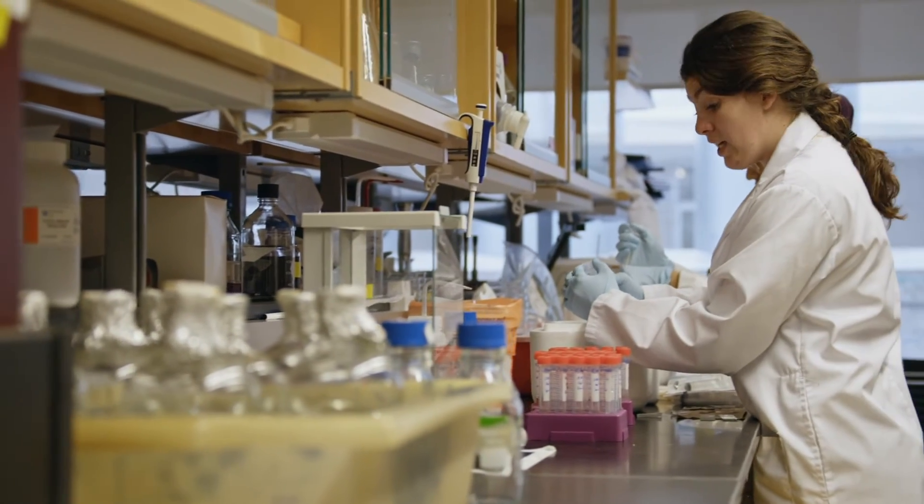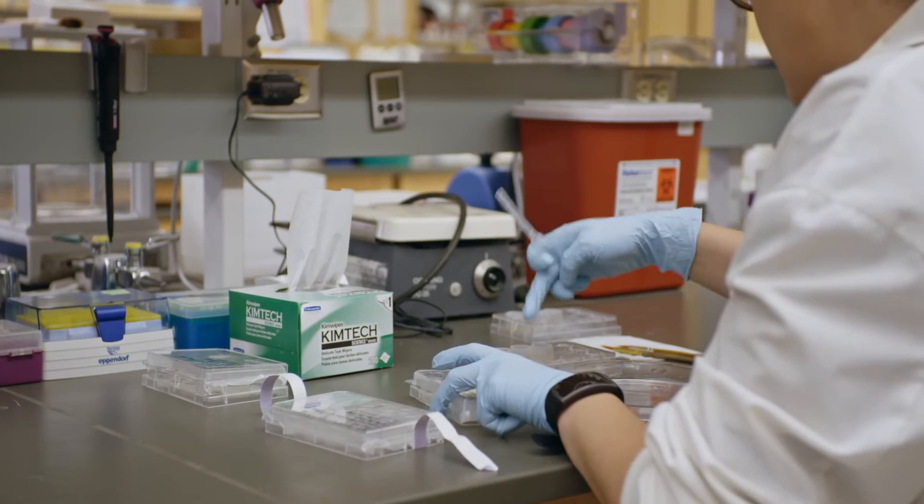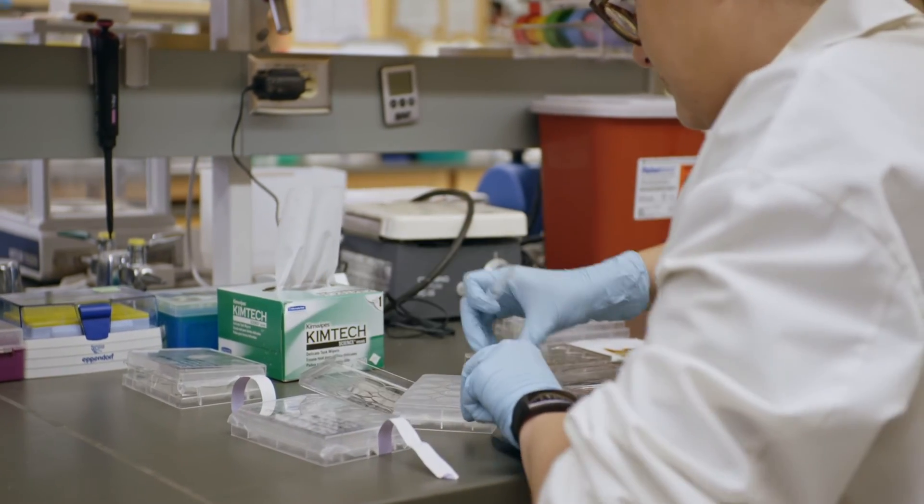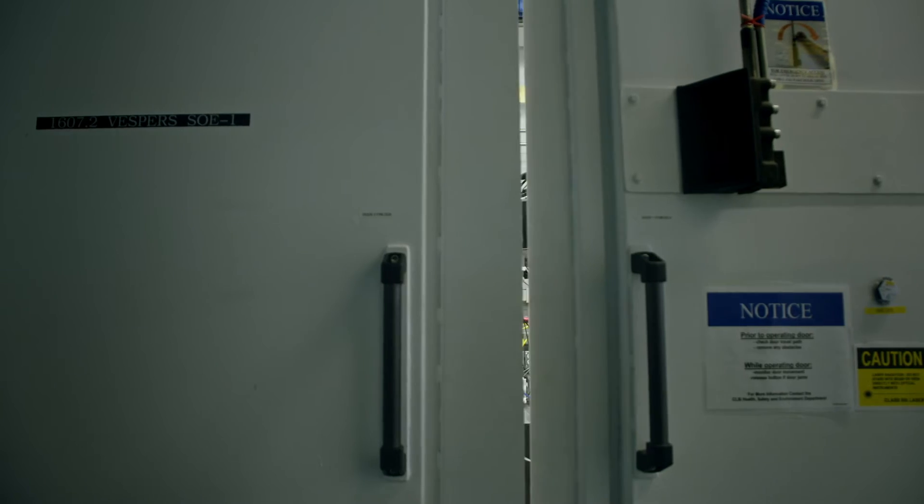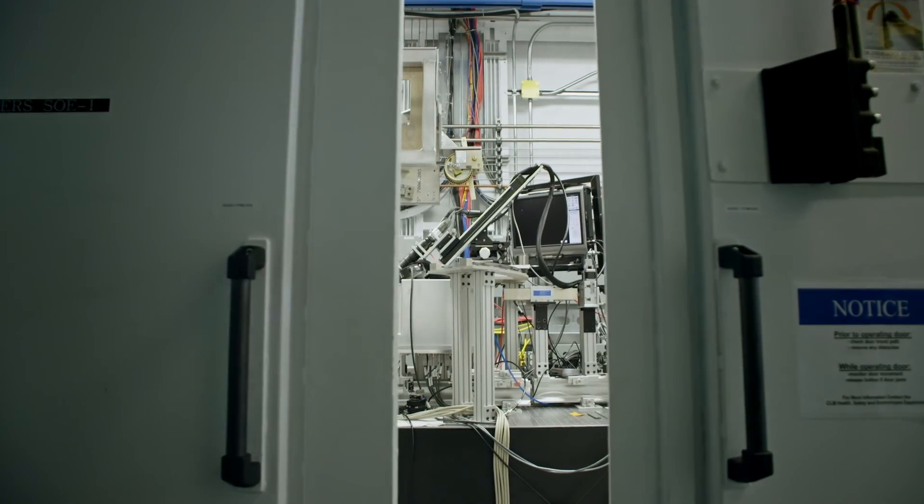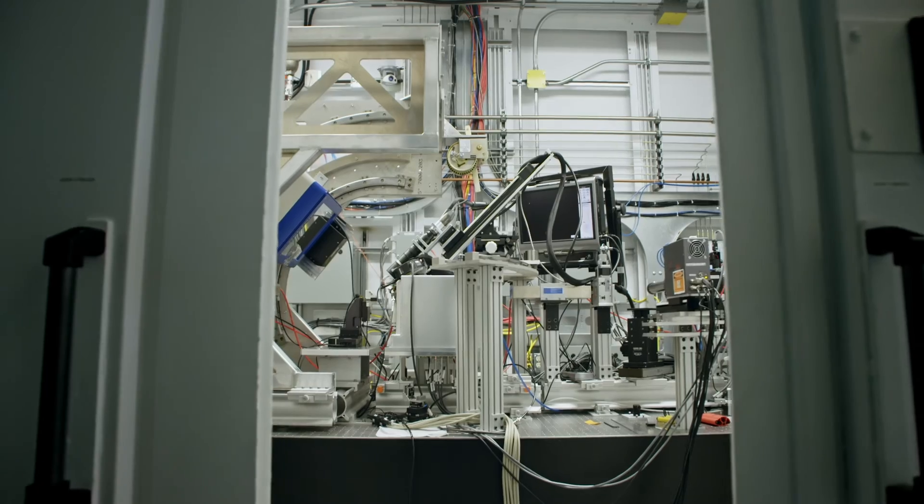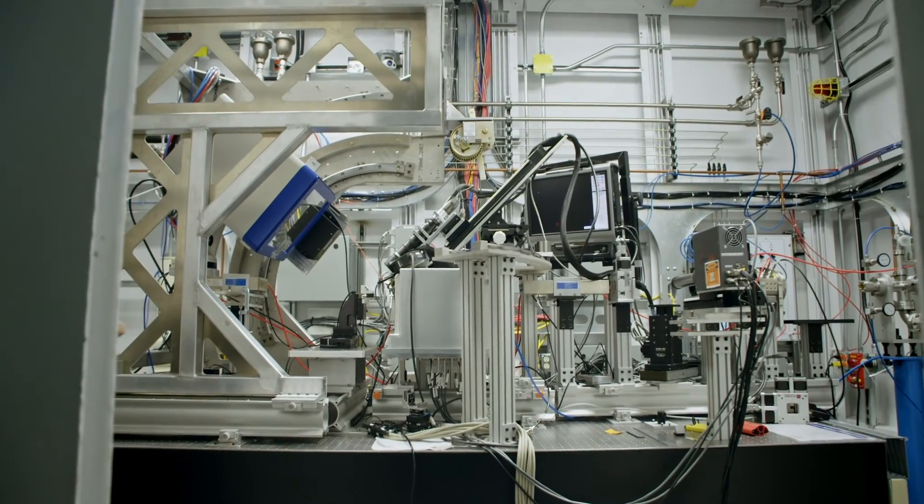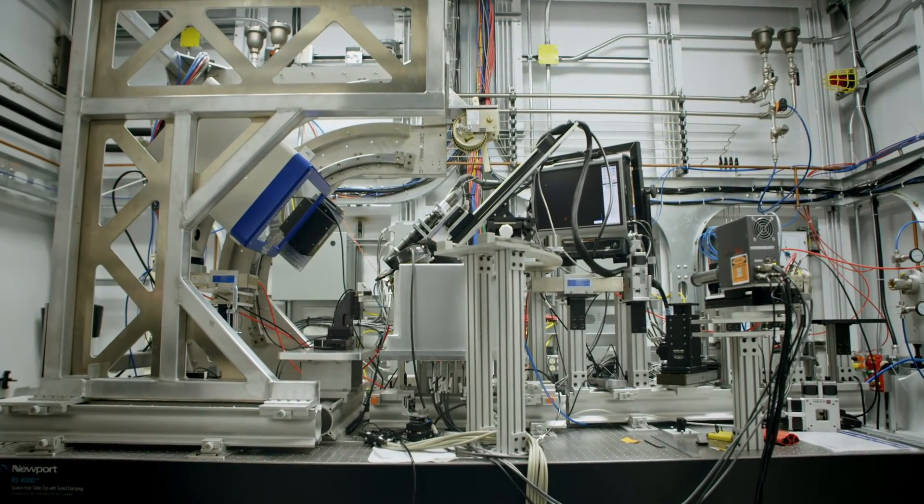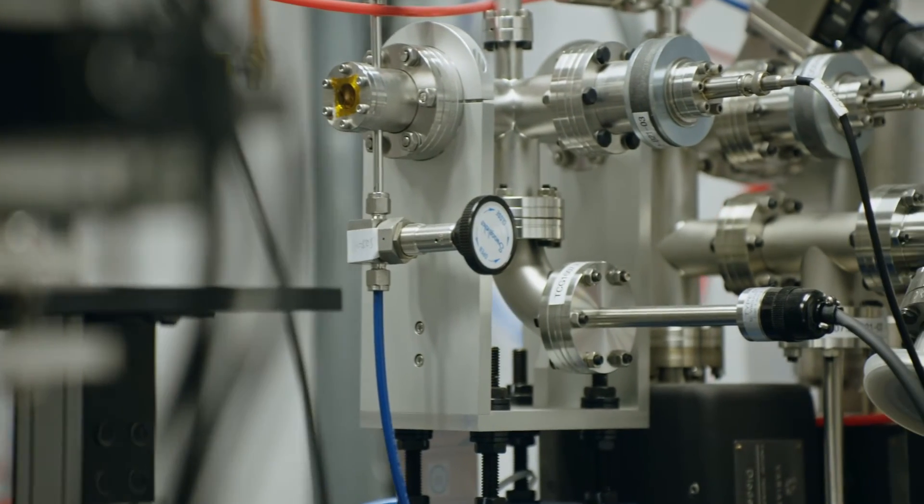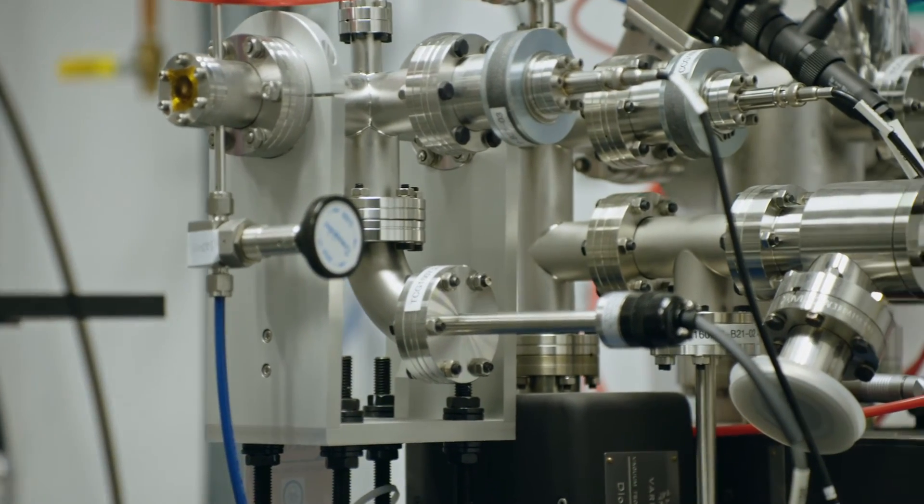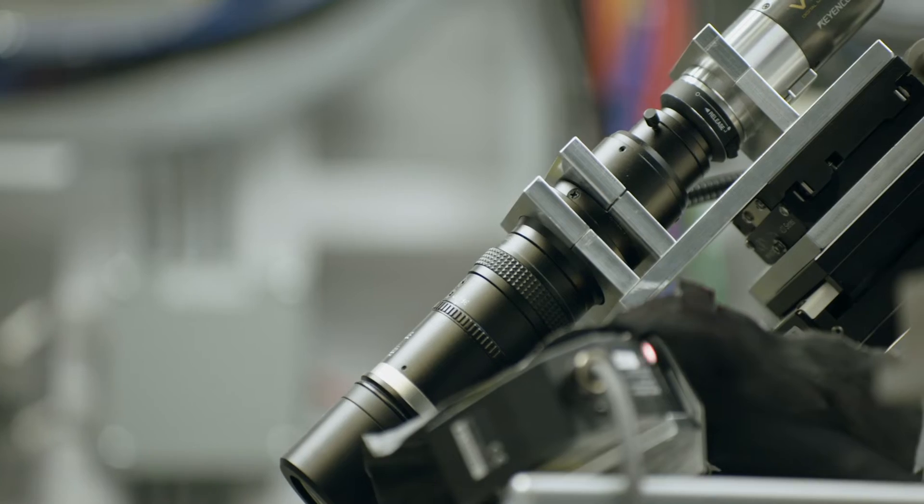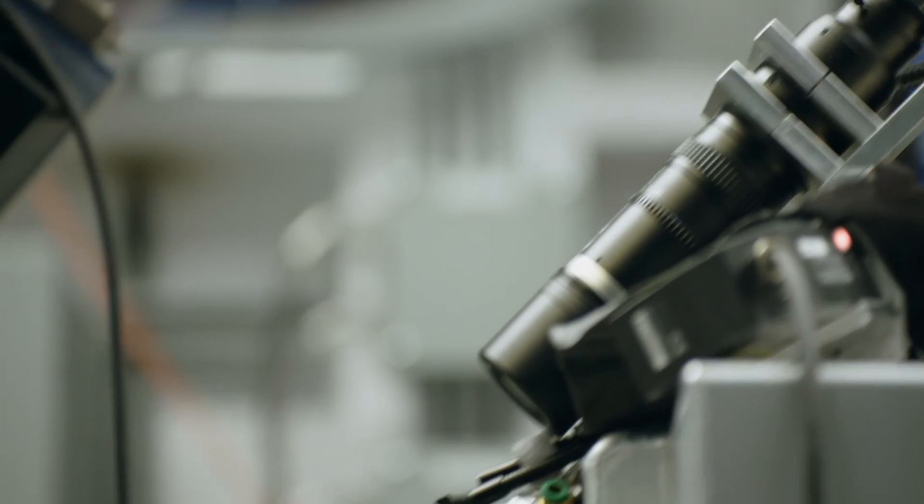We do very thin sections of the plaque—we slice it up into very thin slices and mount them on slides. We take this to the Canadian Light Source where we can use these incredibly high doses of x-ray radiation, so we can identify what atoms are present and where in the plaque.